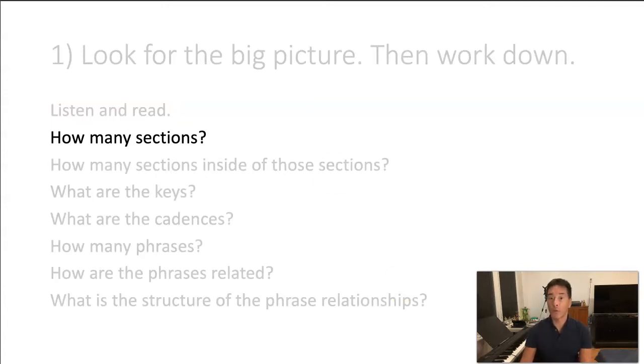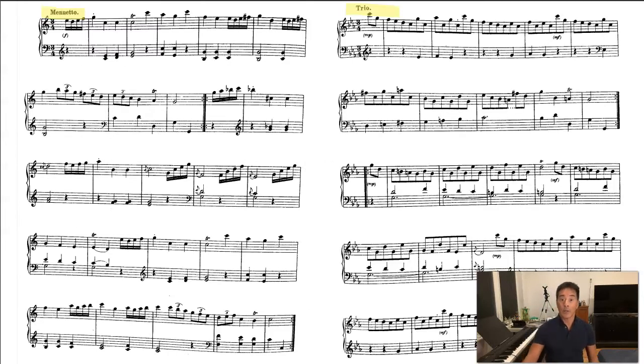So we're going to start off with the most basic part, which is how many sections are in the piece. So here's the piece again. This is the entire minuet. It's the second movement in a Haydn piano sonata.